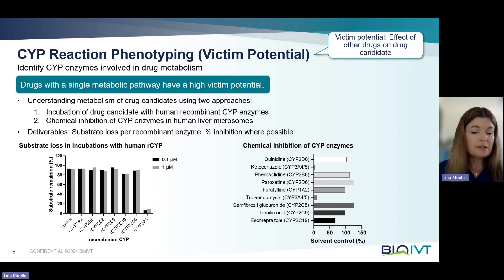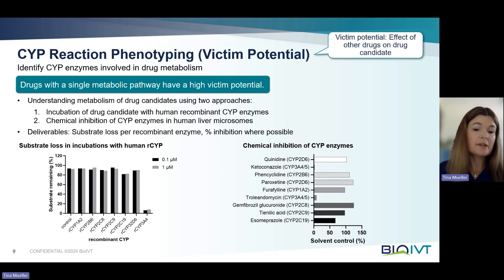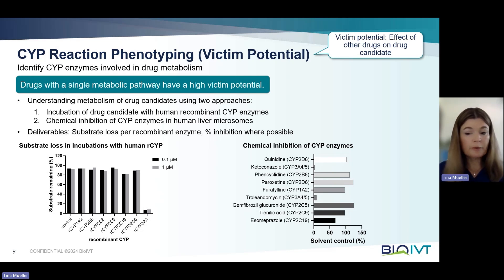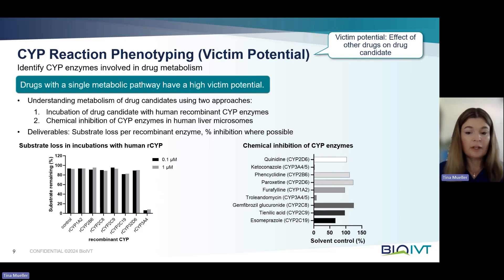The results will show loss of the drug candidate for each of the evaluated CYP enzymes, of which typically seven are evaluated, as seen in the bar graph on the left. For the second approach, CYP enzymes are inhibited with specific inhibitors, and the effect on the metabolism of the drug candidate is determined. The report will provide the substrate loss for the recombinant enzyme as well as the percent inhibition if it was observed.